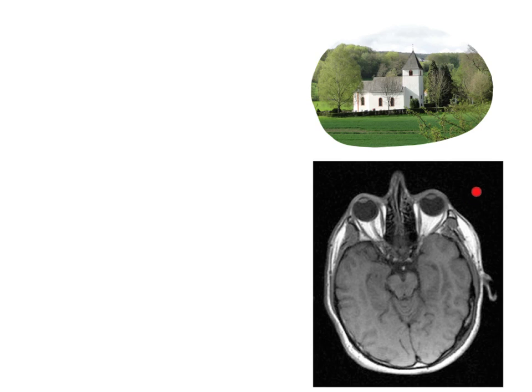The lower image is a transverse T1-weighted MRI scan going straight through the centre of the eyeballs. Here are the eyeballs, and just at the front you can see the lenses of the eyes. This is important because it's going to help explain how we relate visual fields to parts of the retina.